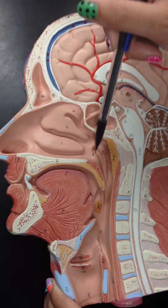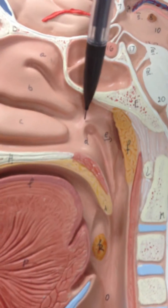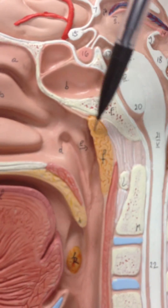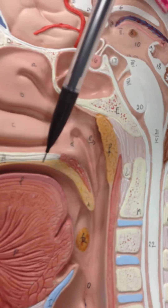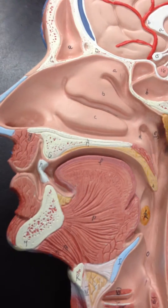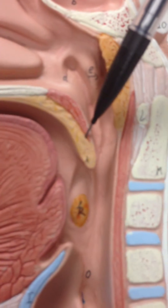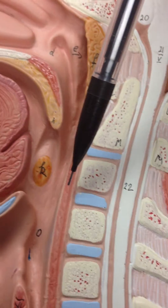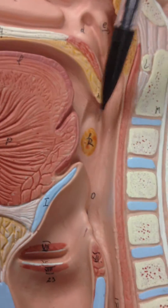Right here is the entrance to the auditory tube, and then the pharyngeal tonsil. You have the soft palate and the hard palate, all the way from here. Right on the edge right here is the uvula, and right underneath it you're going to have the palatine tonsils.